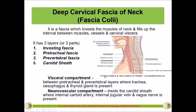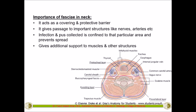The second fascia is called the pre-tracheal fascia, which is in front of the trachea — 'pre' means front. In the cross-section, it is seen around the trachea. This fascia covers not only the front of the trachea but also its sides and behind, and it encloses not only the trachea itself but also the thyroid gland, esophagus, and other structures.